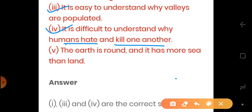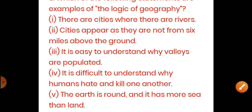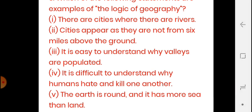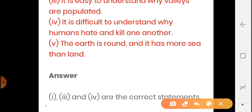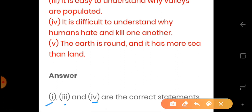Statement five: 'The earth is round and it has more sea than land.' This is also correct as a fact, but it is a normal thing — we already know this. There isn't much logic involved; it is common knowledge. When you study geographic logic, understanding human behaviour is what's not covered. So, the correct statements are number one, three, and four.